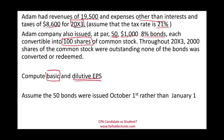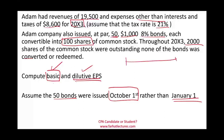A complex capital structure requires you to compute both basic and dilutive EPS. Throughout 20X3, 2,000 shares of common stock were outstanding and none of the bonds were converted or redeemed. We're going to compute the basic earnings per share, then assume the 50 bonds were issued as of October 1st rather than January 1st. In the first scenario, the bonds were outstanding for the full year. Then we will work the scenario as if the bonds were issued October 1st, computing both basic and dilutive EPS.